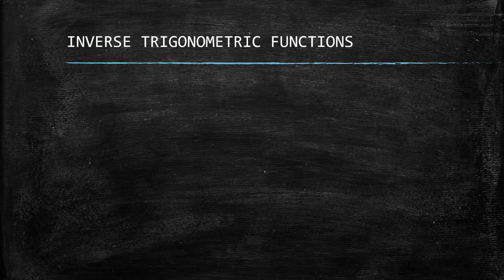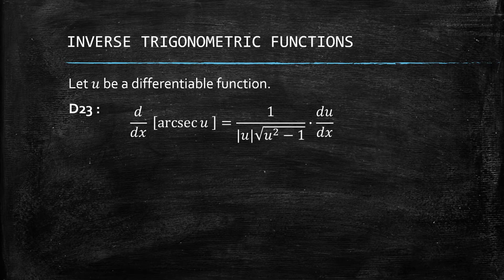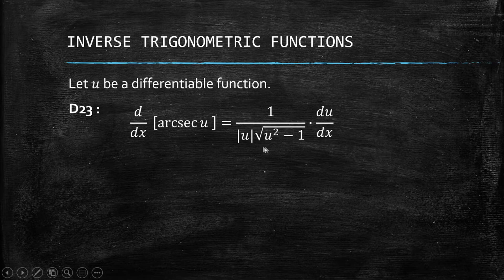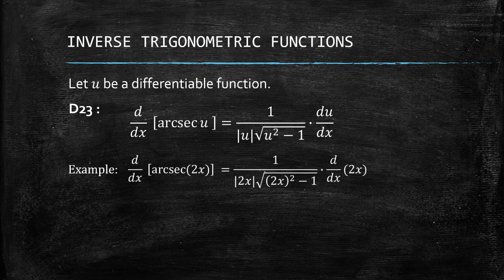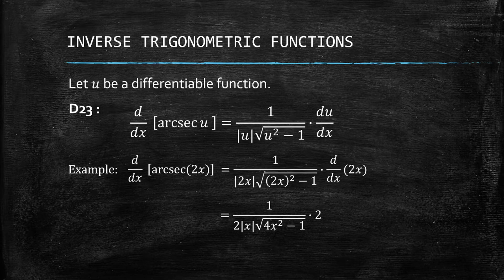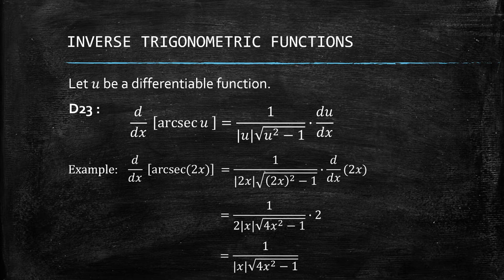Lastly, we have the last pair: arcsec and arccsc. They have the same form, and for arccsc it's just the negative version. The formula is 1 over the absolute value of u times the square root of u squared minus 1, times du/dx. So for example, arcsec of 2x: we apply the formula, then factor out the absolute value of 2, which is just 2, and cancel. Hence we have 1 over the absolute value of x times the square root of 4x squared minus 1.